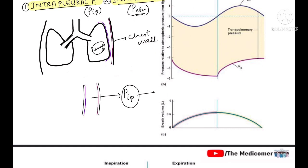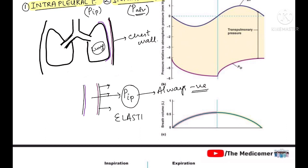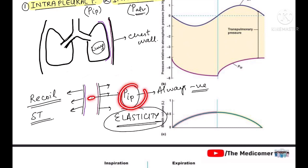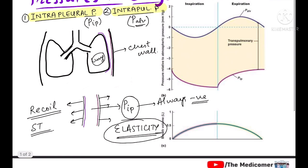This intrapleural pressure will always be negative. The reason is simple: the chest wall has a tendency to go outwards — its natural tendency is to expand due to the property of elasticity. The lung tissue, on the other hand, has a tendency to go inwards because of elastic recoil and surface tension. Because of these two opposing forces, a negative pressure is created in this space, which keeps the two pleural layers close to each other.